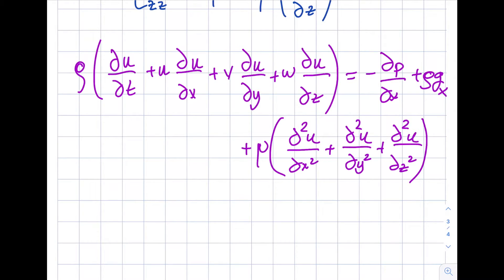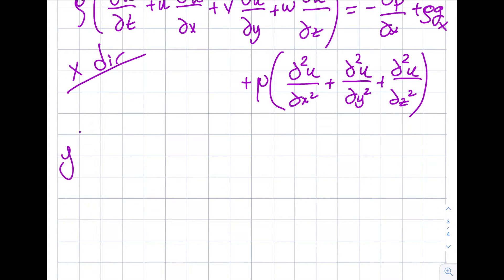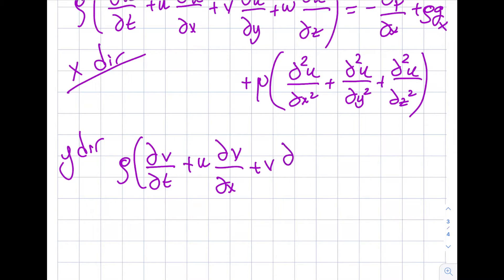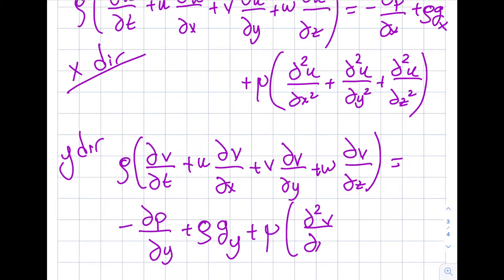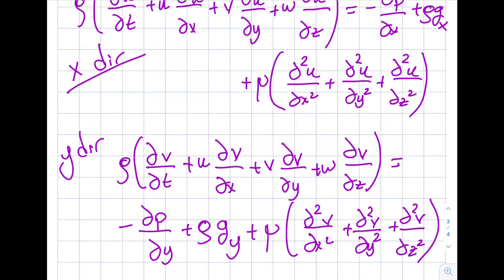The y-direction Navier-Stokes equation is: ρ(∂v/∂t + u∂v/∂x + v∂v/∂y + w∂v/∂z) = −∂p/∂y + ρgy + μ(∂²v/∂x² + ∂²v/∂y² + ∂²v/∂z²).